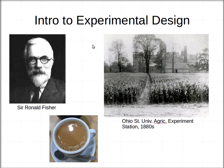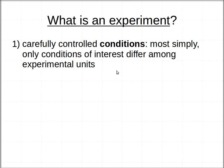A lot of the metaphors and basic designs have come from agriculture. So let's get into what is an experiment. There are four basic conditions — four features or definitions for an experiment. The first is carefully controlled conditions.